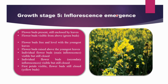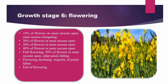Coming to the next stage, that is the flowering stage. Here you can see that 10% of the flowers on the main raceme are open. You can see a bunch of flowers opening, and the inflorescence is opening. The flowers in the mustard are yellow, and up to 40% of the flowers on the main raceme will be opening in this stage. Then 50% flowering, and flowering declining as the majority of petals have fallen by the end of the flowering stage.